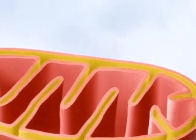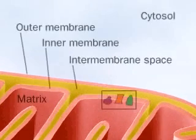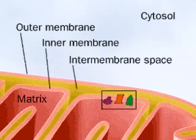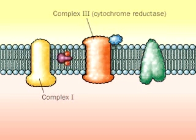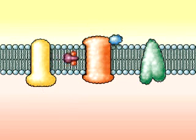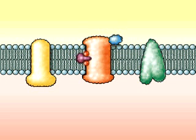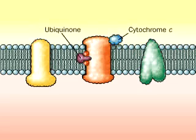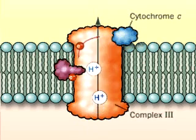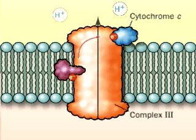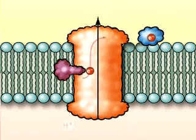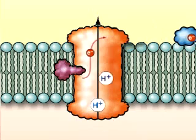Respiratory Complex 3 is a protein complex of the electron transport chain located in the inner mitochondrial membrane. Complex 3, cytochrome reductase, or coenzyme Q cytochrome oxidoreductase, transports electrons from the mobile electron carrier ubiquinone (Q) to another mobile carrier, cytochrome C. For each electron entering Complex 3, approximately two protons are ultimately pumped across the inner mitochondrial membrane and one cytochrome C, a mobile electron carrier, is reduced.